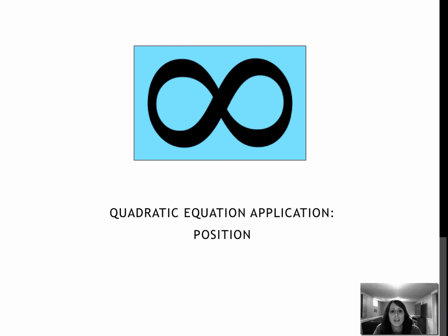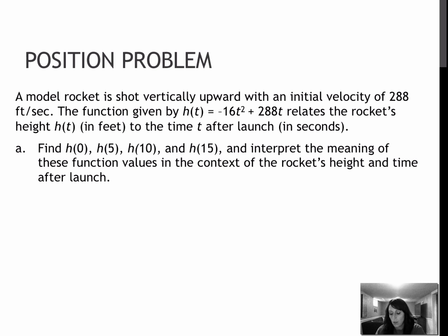The last application we will focus on this week is the quadratic equation position function. For our first question, we have a model rocket that is shot vertically upward with an initial velocity of 288 feet per second. Now they've already given us the function, and it tells me that this function gives me the height of the rocket after t seconds. That means if I plug in the seconds for t on all of the t's, that will give me the height of the rocket.